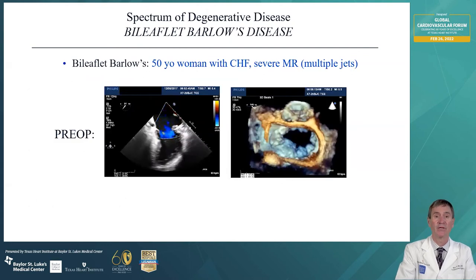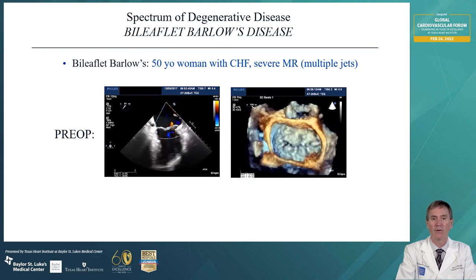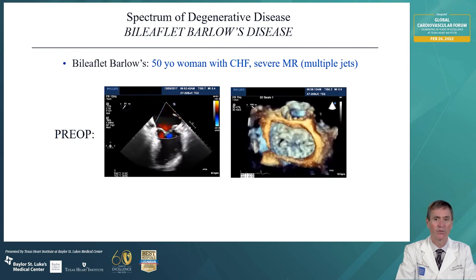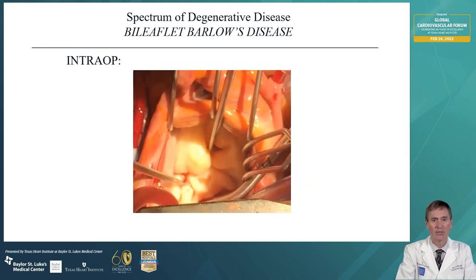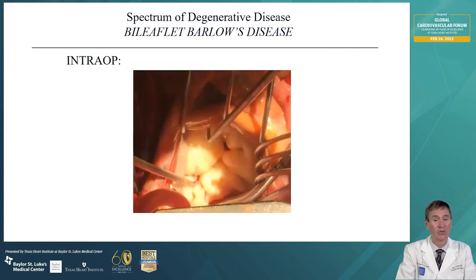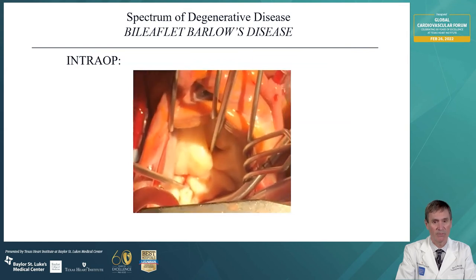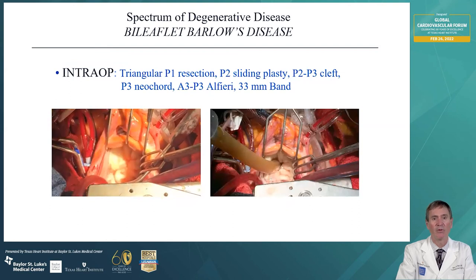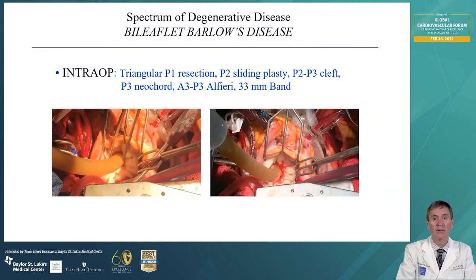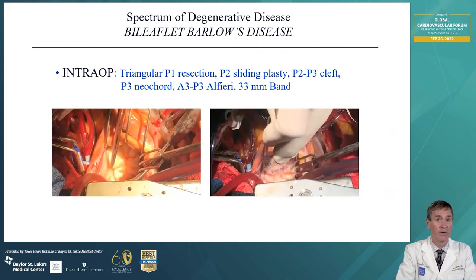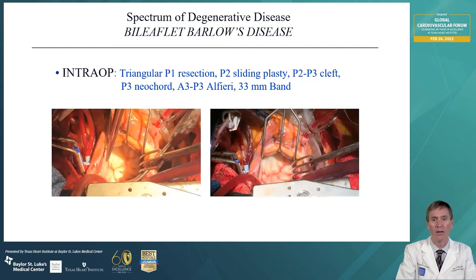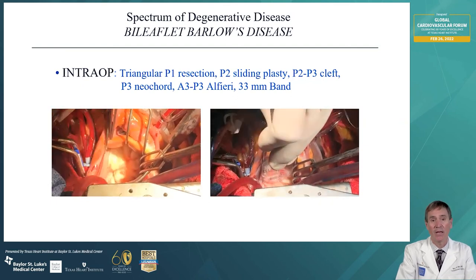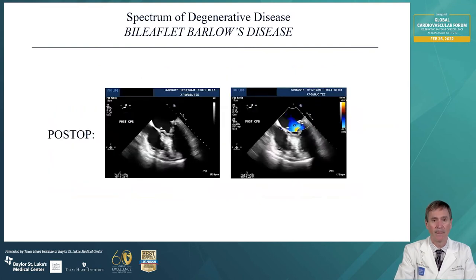And finally there's bi-leaflet Barlow's disease — a 50-year-old woman with congestive heart failure, multiple jets of severe regurgitation, and big leaflets throughout. We do an intraoperative segmental assessment to assess all the valve segments. Usually we use P1 as a reference point because it's usually not affected, but in this patient all segments were affected. Intraoperatively we did a triangular P1 resection, a P2 sliding plasty, a P2-P3 cleft repair, a P3 neocord, and an A3-P3 Alfieri stitch, with no regurgitation after repair, supported with a 33 millimeter band. Sounds complicated, but it's one technique for each lesion — postoperatively, no regurgitation.